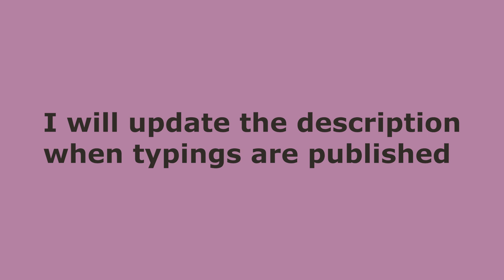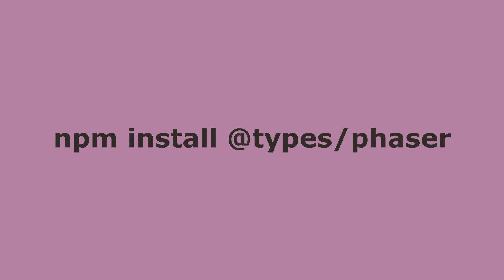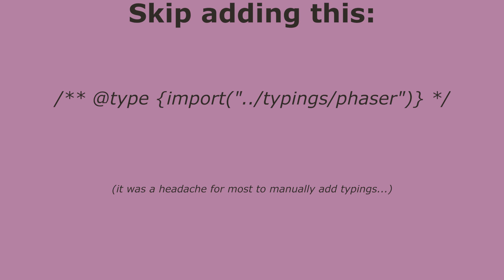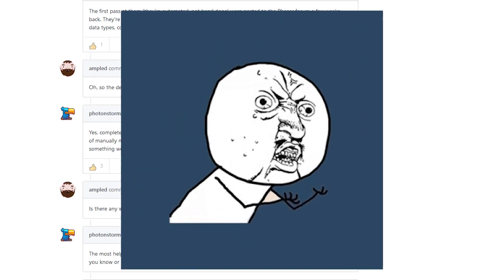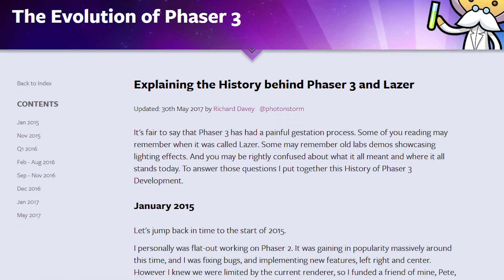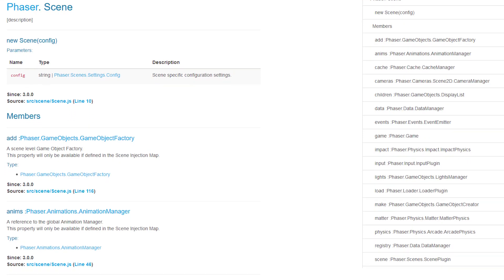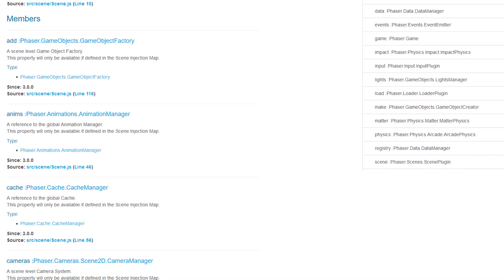If you're watching this from the future: eventually Rich will publish the typings to the DefinitelyTyped repo, and when he does, all you have to do is type npm install @types/phaser — and you won't have to do the comment import step. He doesn't want to do it now for a while because he's a perfectionist when it comes to the types. In the next video I'm going to go over the brief history of Phaser 3, and then after that the core foundation of Phaser, which is scenes. Thanks for watching, catch you later.